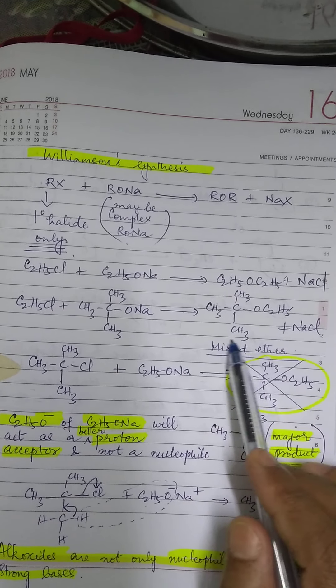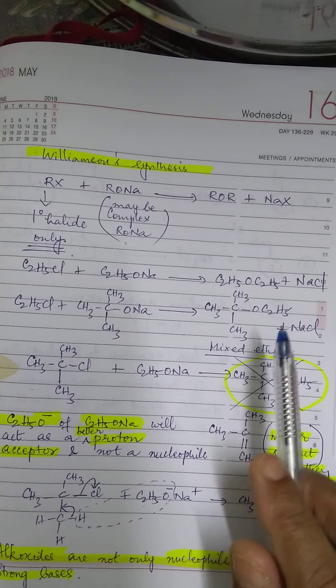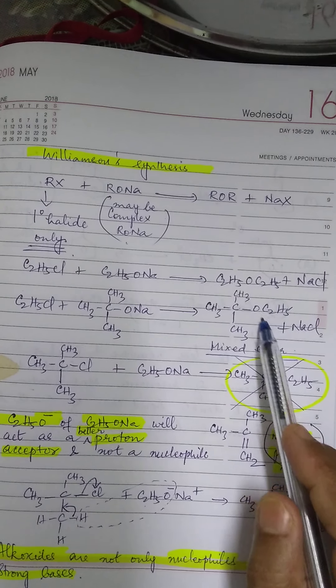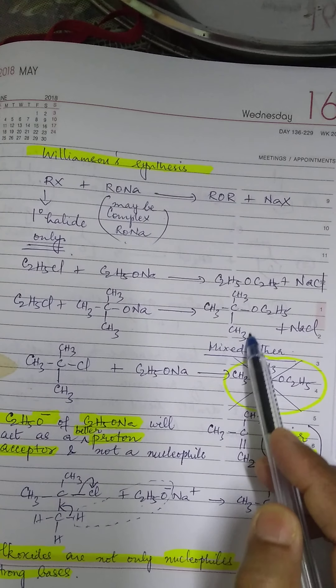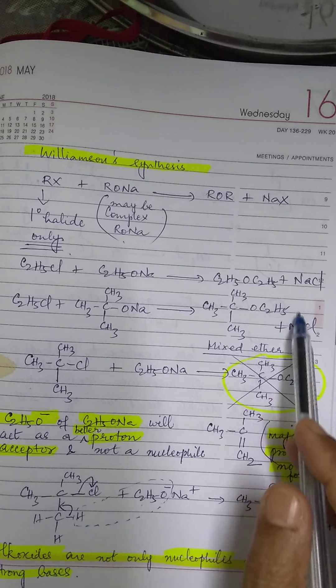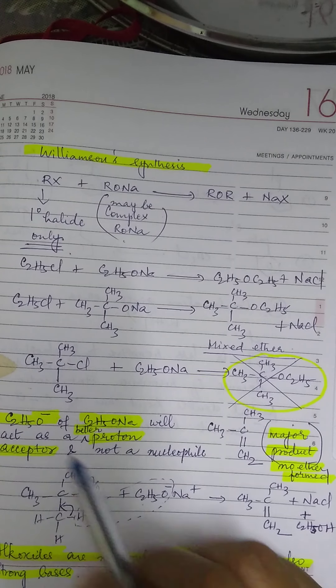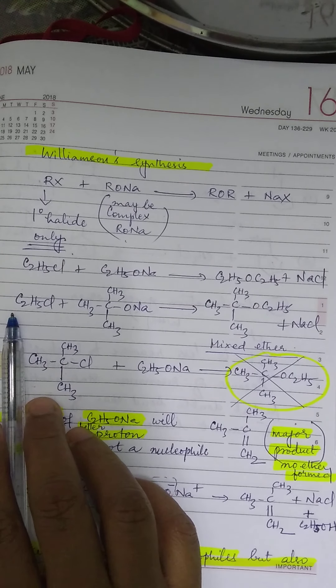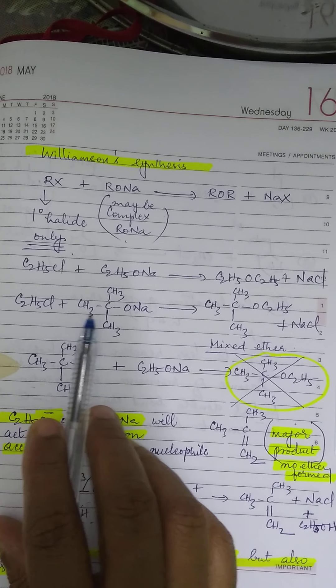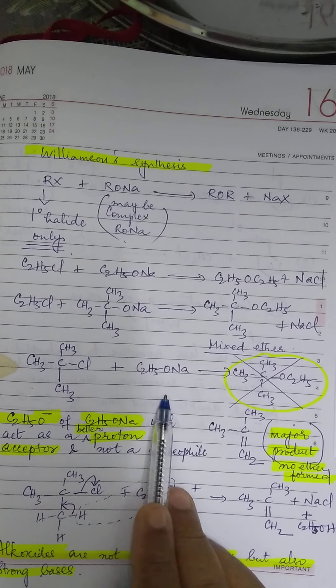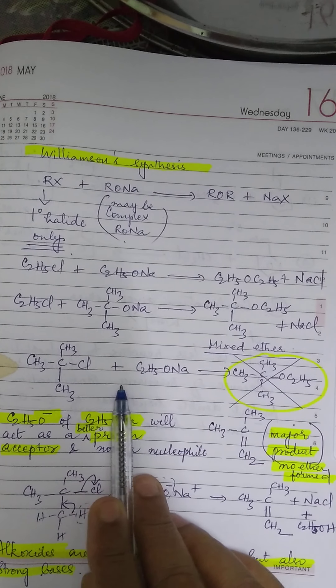But then if you want to prepare an unsymmetrical ether, unsymmetrical ether means surrounding this ethereal oxygen, this is a different alkyl group and this is a different alkyl group. This is ethyl and this is tertiary butyl. This is called an unsymmetrical ether or you can also call it a mixed ether. Now, how can you prepare such an ether? There are two possibilities. You can either take C2H5Cl plus CH3 thrice CONa or if you take it the other way, that is tertiary halide and simple alkyl oxide. In that case, both the possibilities are there.